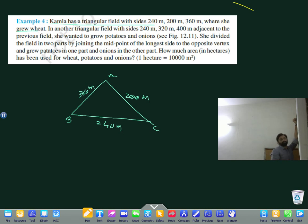Draw a triangle without any hesitation and name it as A, B, C. With sides 240, 200, and 360 meters. She will grow wheat. In another triangular field with sides 240, 320, and 400 meters adjacent to the previous field, she wants to grow potato and onion.